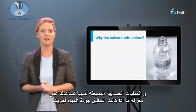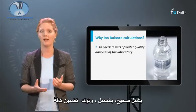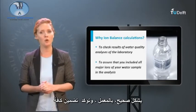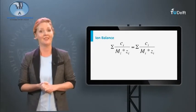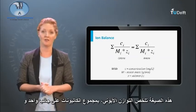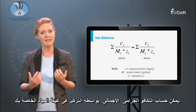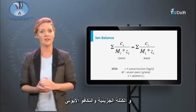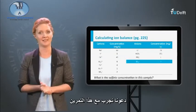This relatively simple calculation will help you to check if water quality analyses were performed correctly by a laboratory, and to assure that you included all relevant major ions in your water sample analysis. This formula summarizes the ion balance, with the sum of cations on one side and the sum of anions on the other side. The milliequivalents can be calculated with the concentration in your water sample, the molar mass and the valence of the ion. Let's practice with an exercise.